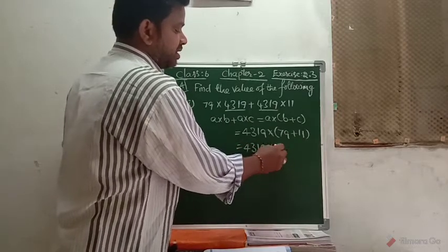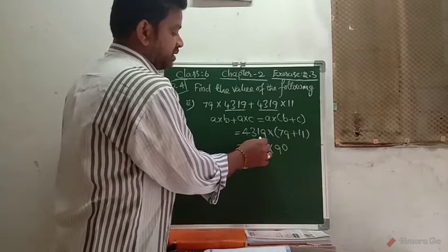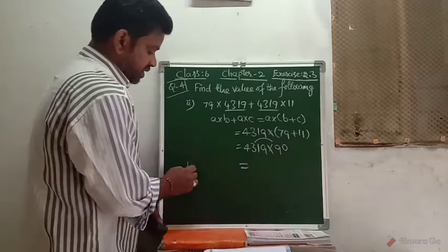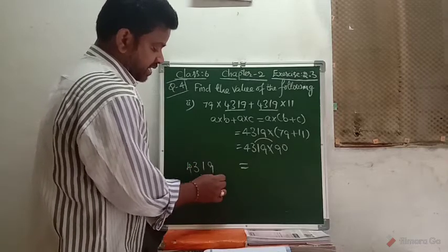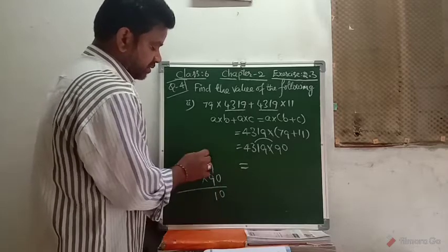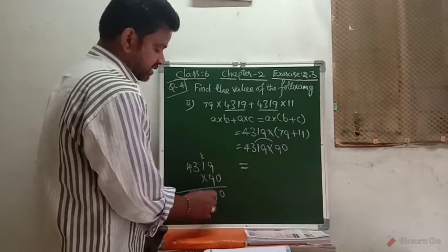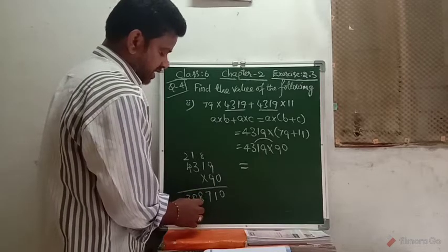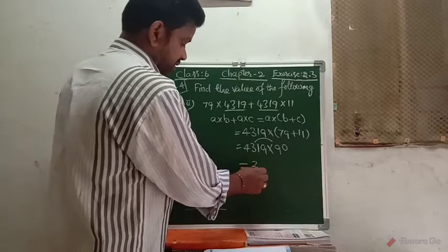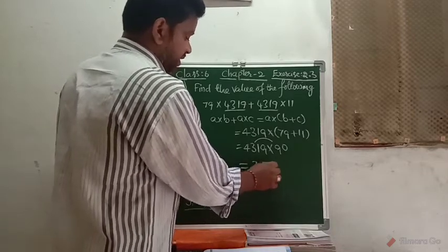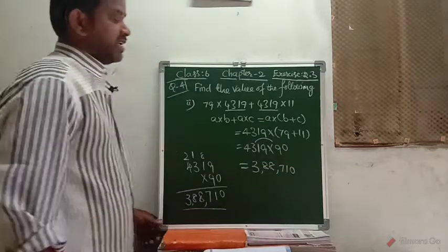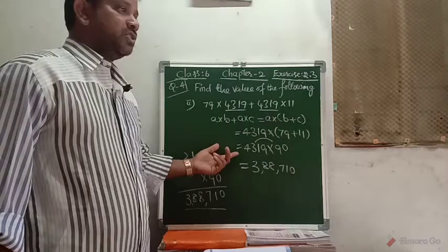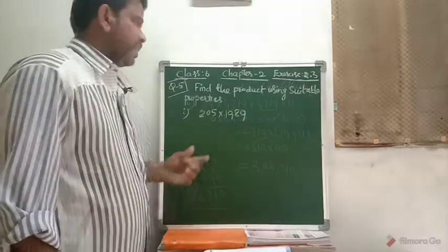So we write 4319 into 79 plus 11, which is 4319 into 90. You just multiply 4319 by 9 and add one zero after the product. 9 times 9 is 81, carry 8; 9 times 3 is 27 plus 8 is 35; 9 times 4 is 36 plus 3 is 39. We can give the solution this way using the distributive property.